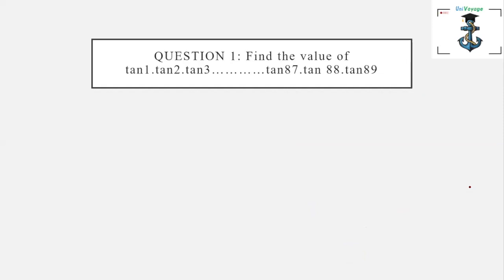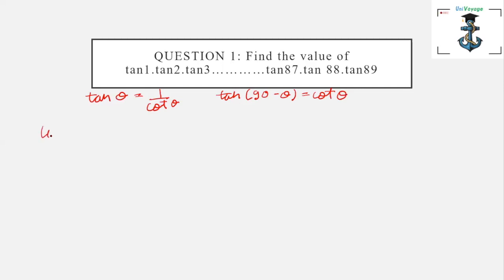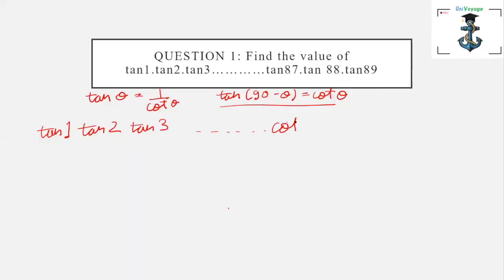The value of tan 1 × tan 2 × tan 3 × ... × tan 87 × tan 88 × tan 89. From the formula we know that tan of (90 minus theta) is equal to cot theta. So let's rewrite the question: we write tan 1, tan 2, tan 3, and then we write tan 87 as cot 3. Similarly, tan 88 can be written as cot 2, and tan 89 can be written as cot 1.